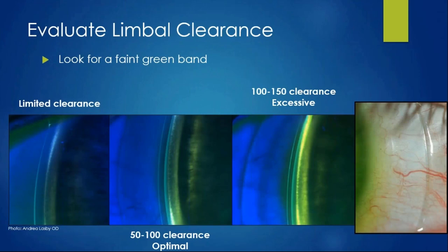Staining at follow-ups is huge—a lot goes on when they're not in your chair. The optimal 50 to 100 microns clearance is still large enough for the human eye to see. A very minimal green band at the limbus means that after settling the lens will likely be resting on the limbus. On the other side, clearance of 100 to 150 microns may be a bit of excess, potentially limiting oxygenation there.